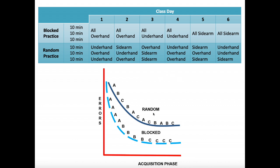When comparing random and blocked practice, we look at the number of errors during the acquisition phase — when we're first learning the motor task. In blocked practice (shown as AAAA, BBBB, CCCC), the number of errors is lower. That makes sense because you're doing the same task over and over again, so you're getting pretty good at it. In random practice (ABC, BAC — clearly randomized), there are more errors during the initial acquisition phase compared to blocked practice.